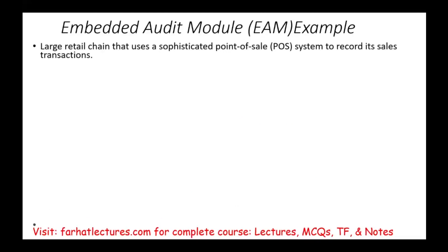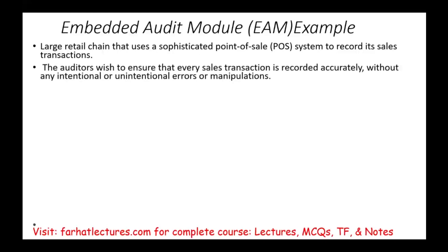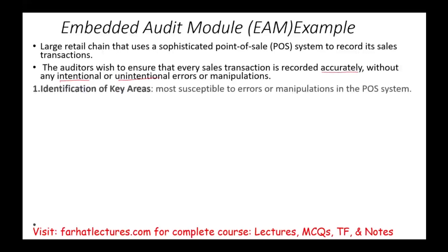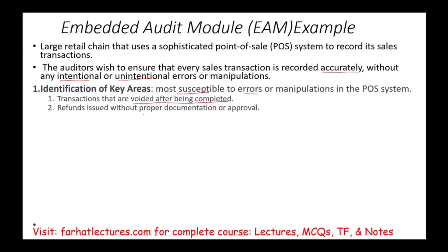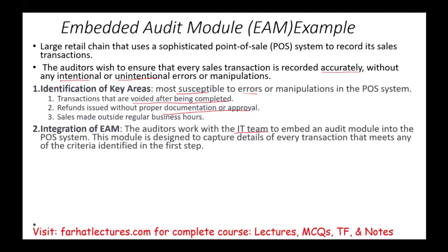For example, assume a large retail chain uses a sophisticated point-of-sale system to record sales transactions. The auditor wishes to ensure every transaction is recorded accurately without errors or manipulation. They first identify susceptible areas: transactions voided after being completed, refunds issued without proper documentation or approval, and sales made outside regular business hours. The auditor works with the IT team to embed an audit module into the POS system, designed to capture details of every transaction meeting those criteria.